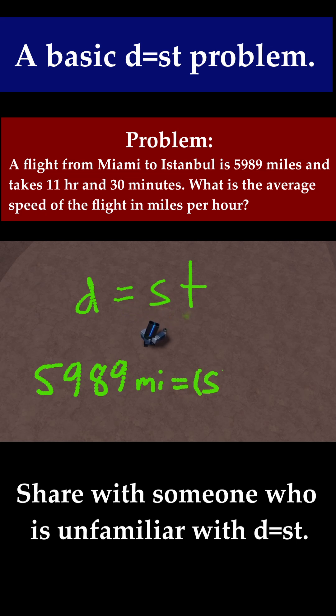I don't know what that speed is. And that's for the time. Because we want this in miles per hour, we need to convert 11 hours and 30 minutes into just hours. Well, 30 minutes is just half an hour. In other words, it's 0.5 hours. So the total time is just 11.5 hours.